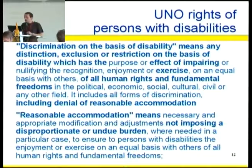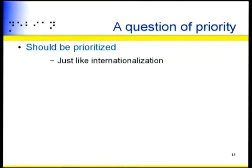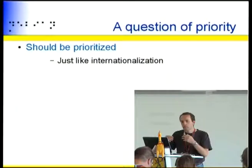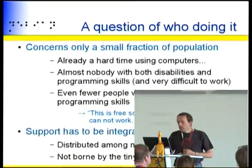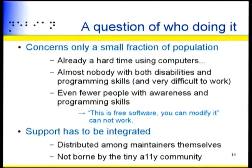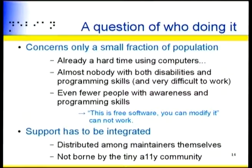Making things easy for Debian maintainers so that they have to do it in a practical way — for us it's a question of priority. It's a bit like internationalization: basically the same issue, and everybody has to do it for their own language. Every package should have it. But more importantly, it's a question of who is doing it. Accessibility is a problem in that it concerns a really small fraction of the people using computers, who already have a hard time using computers.